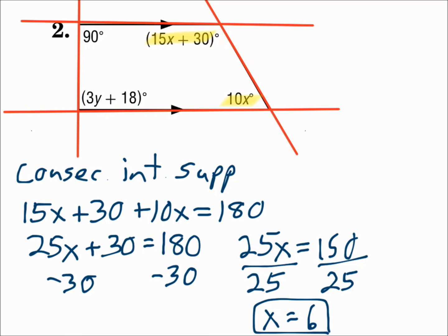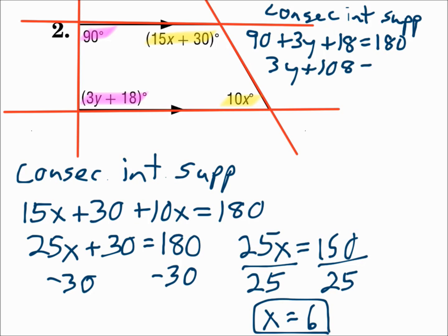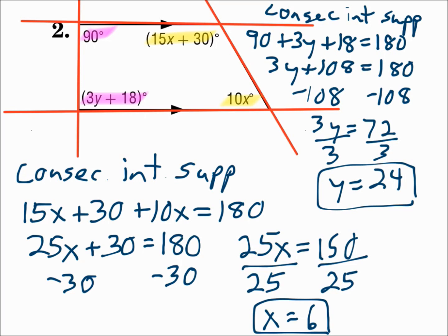The other two angles are on the other transversal. Those are also between the parallel lines on the same side of the transversal. So those are also consecutive interior angles, which are supplementary. So those angle measures add up to equal 180 as well. 90 plus 18 is 108. Subtract 108 from each side. And divide by 3. Y is 24. So we had consecutive interior angles, which are supplementary, so their measures add up to equal 180. Determine the angle pair, and then either make them equal each other, or make them add up to 180.